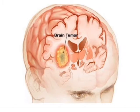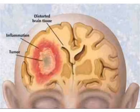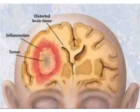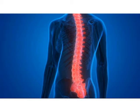These tumors can cause damage by growing and pressing on other parts of the brain. In some cases, a benign tumor can develop into a malignant tumor. If these benign tumors develop into a malignant tumor, they are more dangerous because they can grow rapidly and spread to other parts of the brain or to the spinal cord.